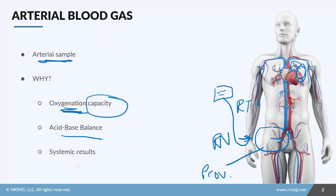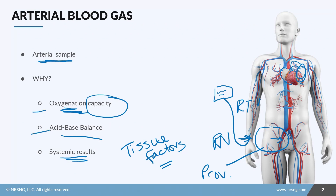We get systemic results that completely eliminate what I call tissue factors — things that could happen at the tissue level affecting the patient's ability to oxygenate. This blood gas looks at oxygenation and acid-base balance before the tissues get involved. It's like running a diagnostic on a car: we're not trying to find out how much damage has been done, but what's not working before it causes damage.